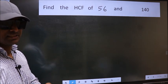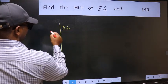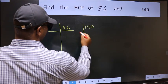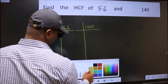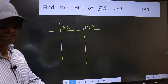What I mean is, write 56 and 140. This is your step 1. Next, in this number, last digit 6 is even, so take 2.